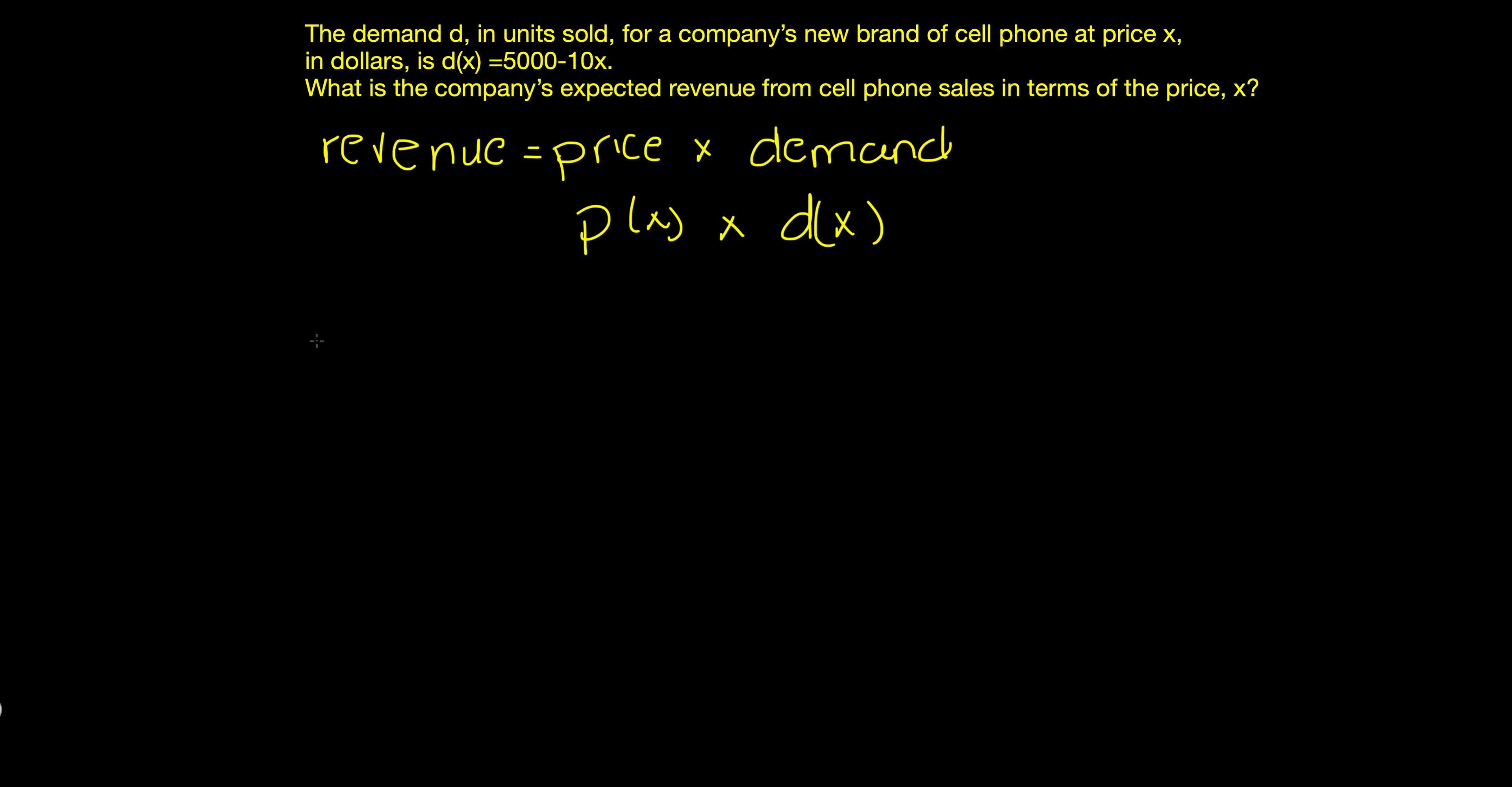So the way I might write this out is p(x) or p times d with respect to x. Because that's what they're asking us. They're asking us for the expected revenue in terms of x. But this essentially is equal to p(x) times d(x).